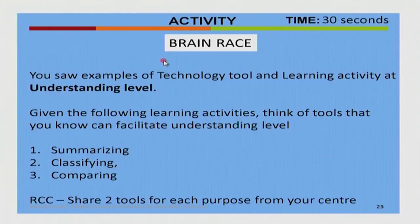Let us have one more small activity. This is called brain race. You saw examples of technology tools and learning activities at the understanding level. Given below are learning activities at the understanding level — that is summarizing, classifying, and comparing. You have to think of tools that you know will facilitate the understanding level within the Digital Bloom's Taxonomy.